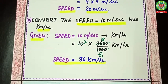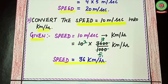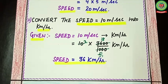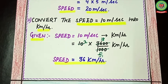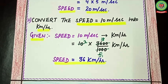Today we have discussed the formulas to find speed, distance and time. We have also learned how to convert speed units — kilometer per hour into meter per second and meter per second into kilometer per hour. Please go through the YouTube links sent with your homework, as they are very helpful for understanding these concepts.